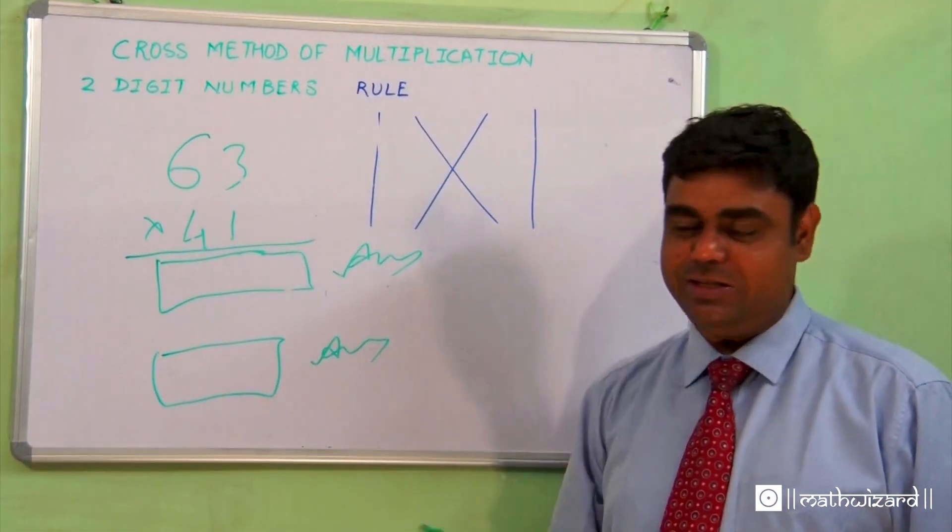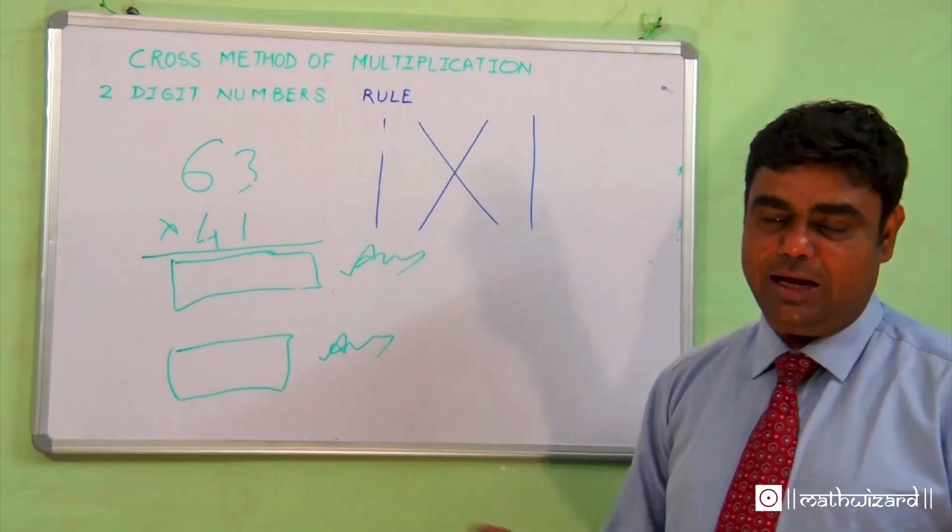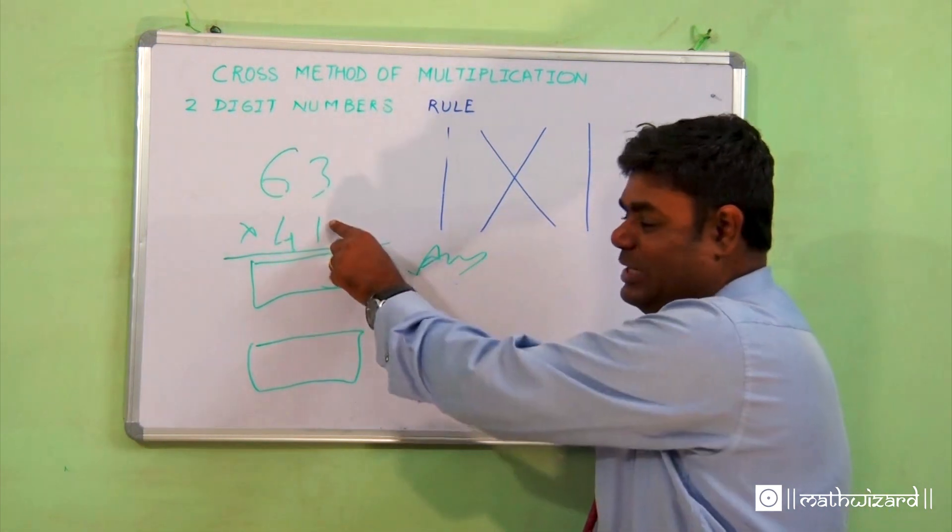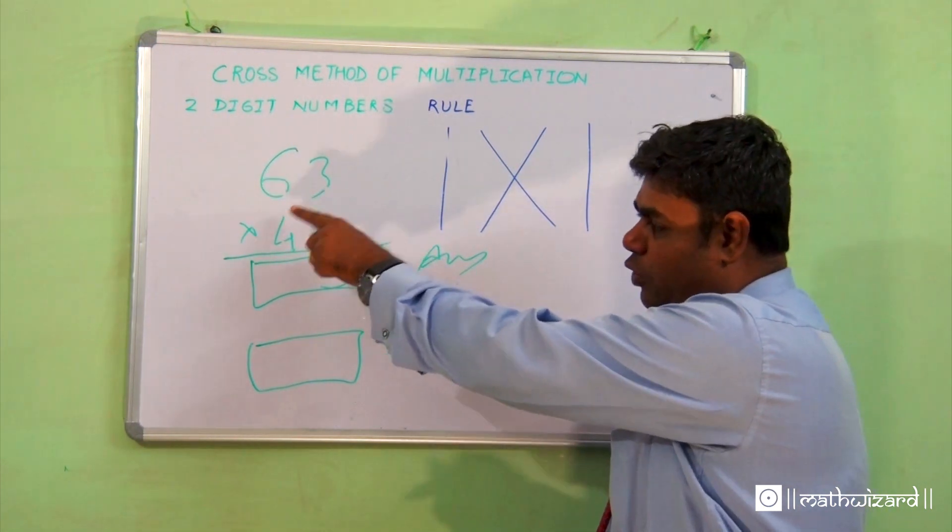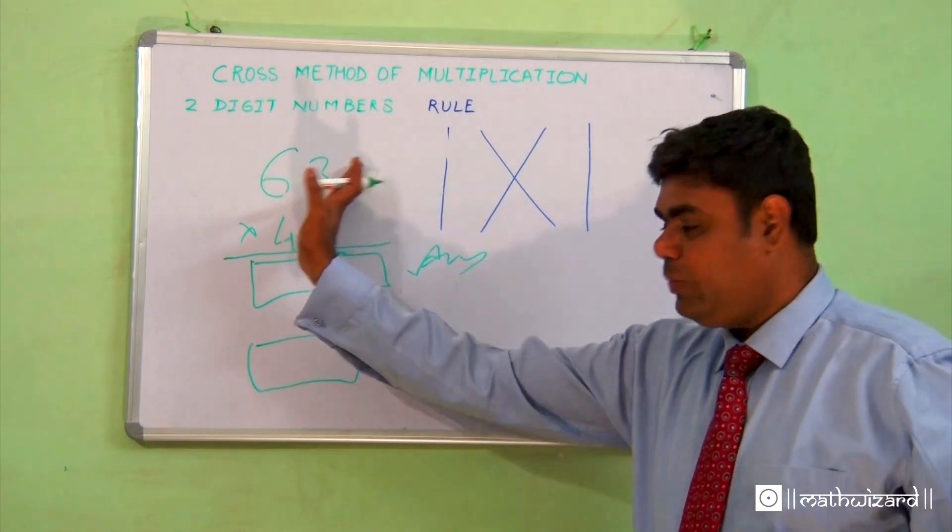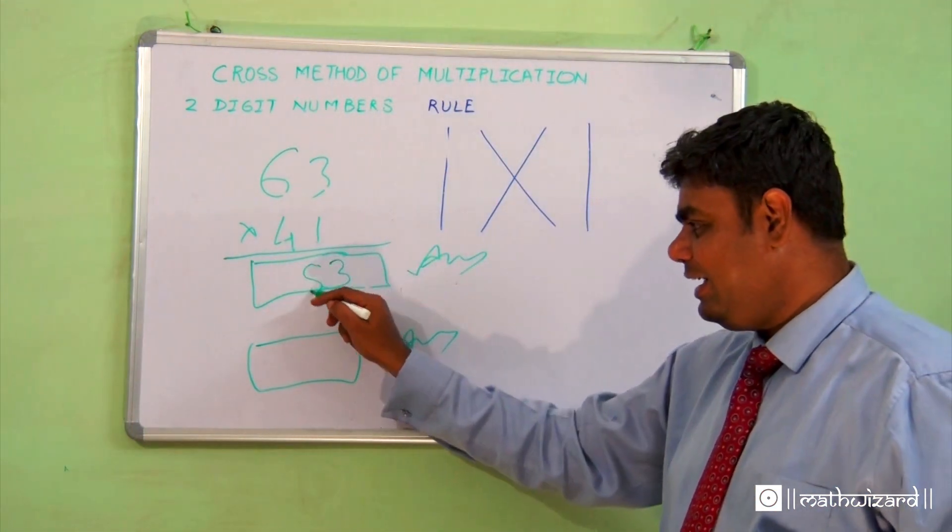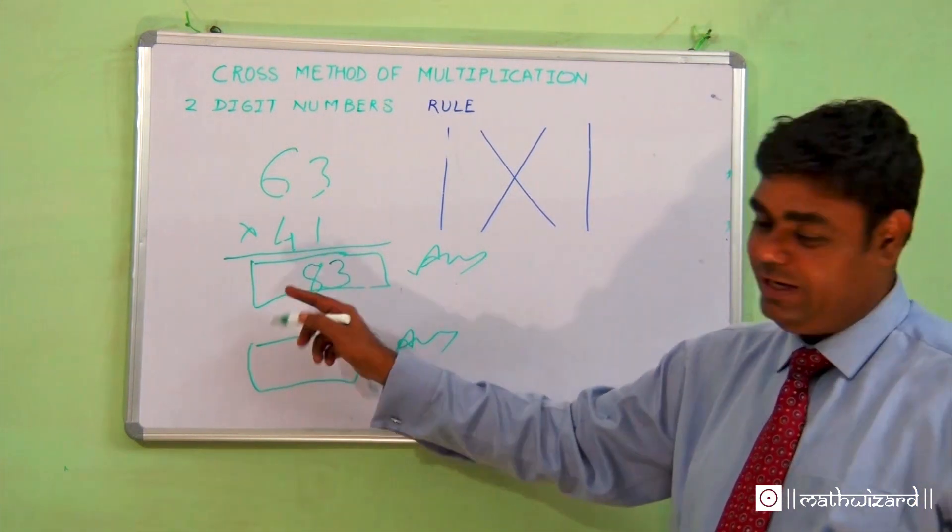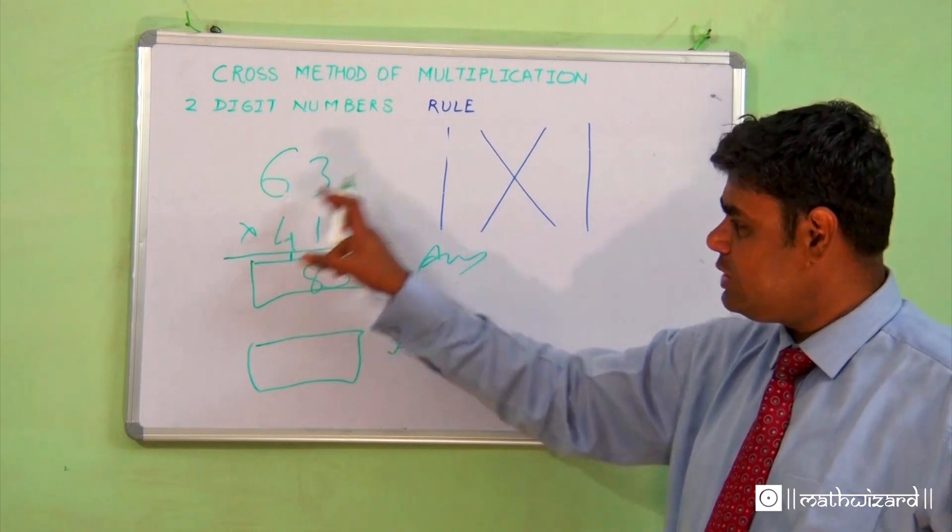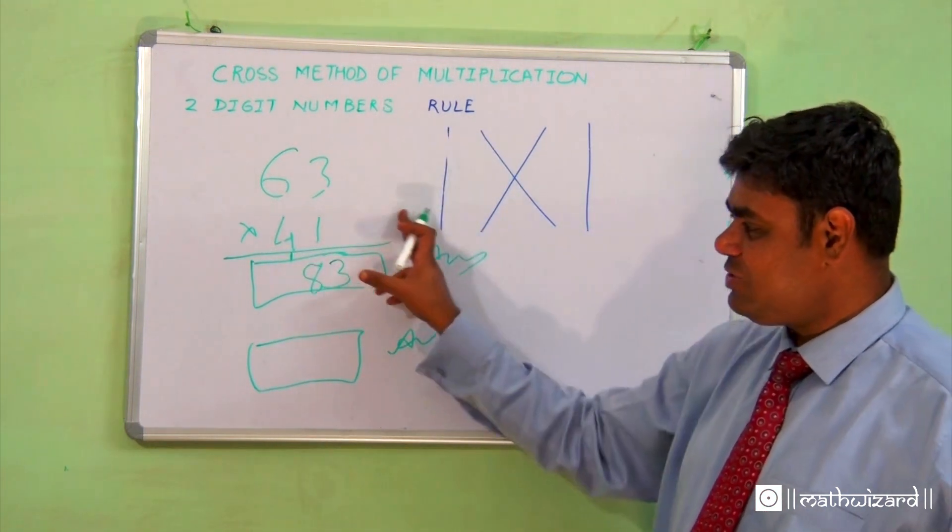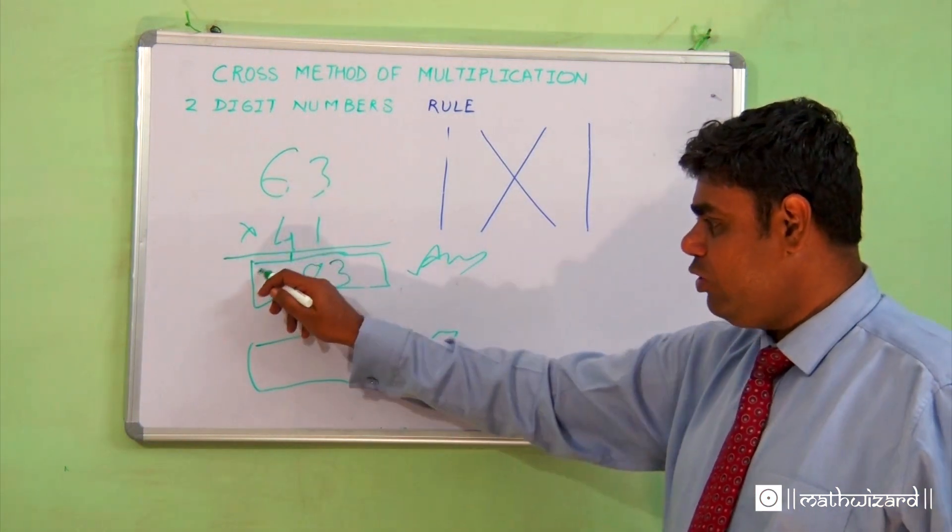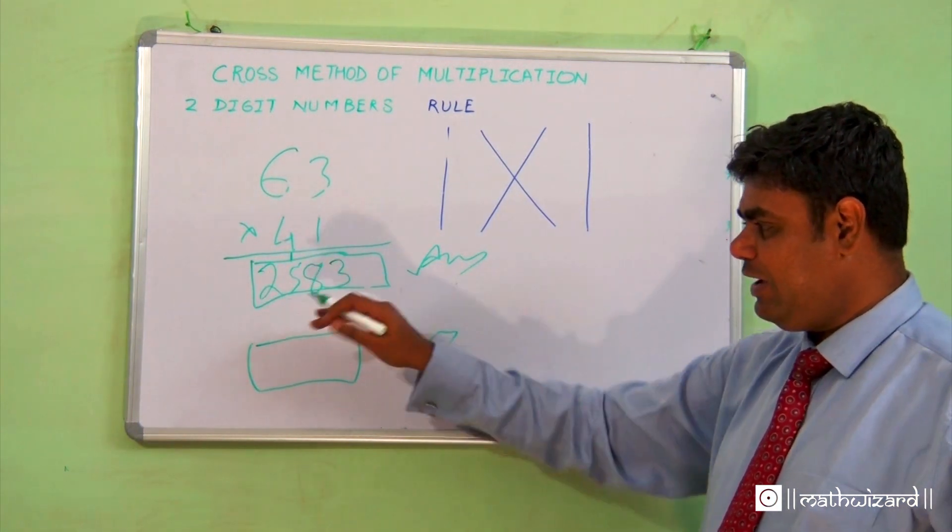Three ones are three. Second step: six ones are six, four threes are twelve. I got a six from here, a twelve from here. If I add it up, I get 18. I can't write full 18, I'll carry the balance one. Six fours, because it says last step is a straight line. Six fours are 24, and one balance is 25. My full and final answer is 2583.